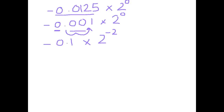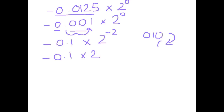Moving right means subtracting, so our exponent changes from 0 to negative 2. When we move to the right we subtract the number of times the decimal point moved; when we move to the left we add. So we have minus 0.1 times 2 to the negative 2. Now we convert the exponent to 2's complement binary. Positive 2 is 010; to get negative 2 we keep up to the first 1 and invert everything after, giving 110 in 3 bits.